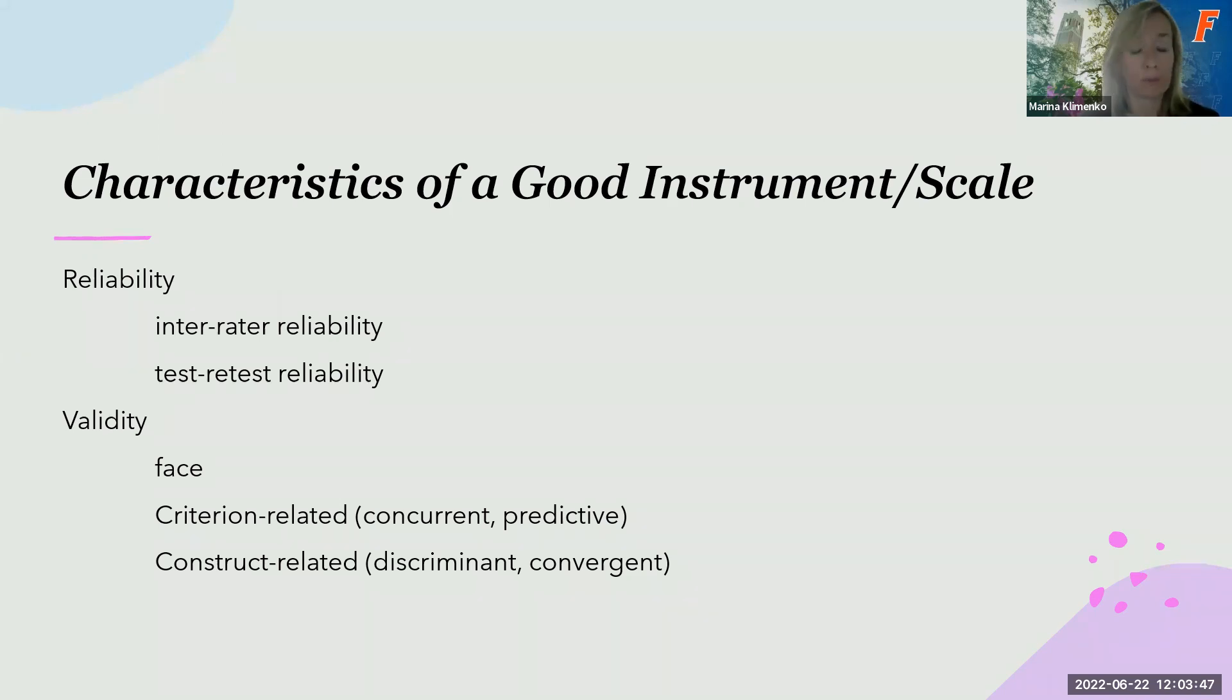There are several ways that we assess validity. One thing that I do want to point out is that an instrument could have high reliability but low validity and vice versa. An instrument could have high validity but low reliability. Those two concepts, reliability and validity, are different characteristics of a scale.